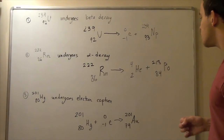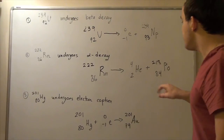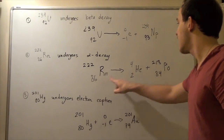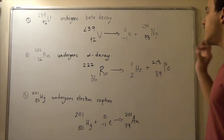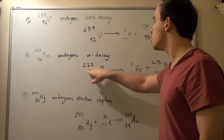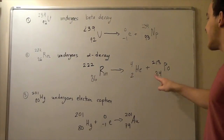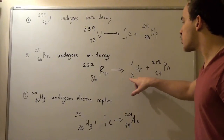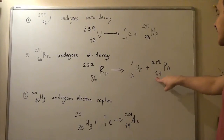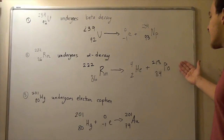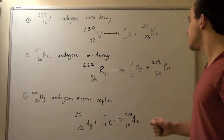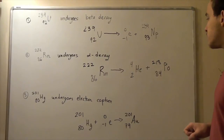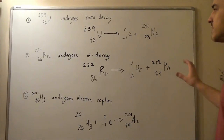It decomposes into polonium. Because two plus 84 should give us back 86, and four plus 218 should give us back 222. To calculate the atomic number of our new atom, we subtract 86 minus 2, which gives us 84. We check our periodic table and see that polonium has 84 protons. So this is alpha decay.